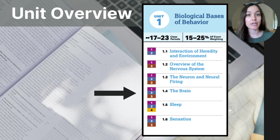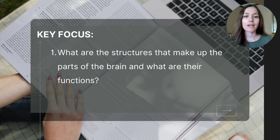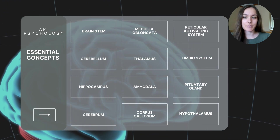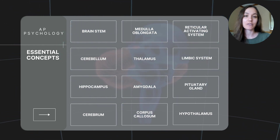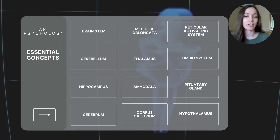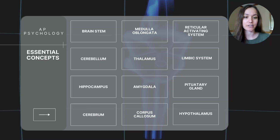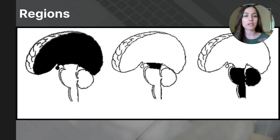This will cover about three videos in our series. Today's video will just focus on the structures of the brain, and today's key focus question is: what are the structures that make up the parts of the brain and what are their functions? These are the essential concepts that will be covered in today's video lesson. By the end, you will be able to describe each of these parts as well as where they're located and their functions. We can divide the brain into regions, and these regions help us better explain the location of the structures of the brain.